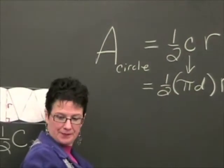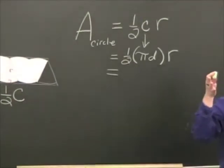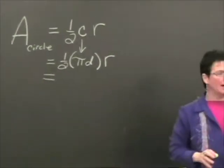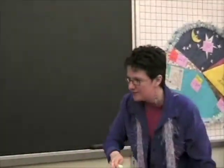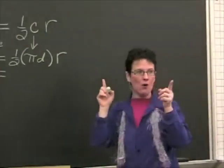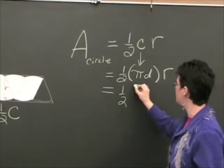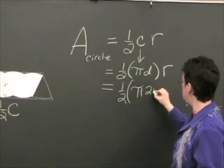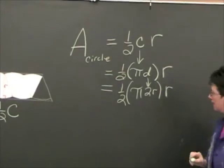Now, think about it. We can make this even simpler. A diameter is how many radii? Yes, it's two. So look, I can write this as one half times pi times the diameter which would be two radii and then times the height of R.